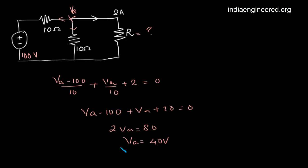Now we have 40 volts here causing a current of 2 amperes. What will be the resistance? Resistance R will be VA divided by 2, that is 40 divided by 2, which equals 20 ohms.